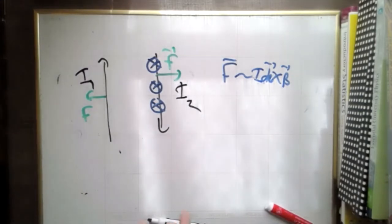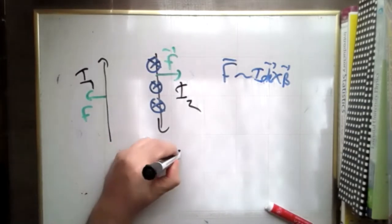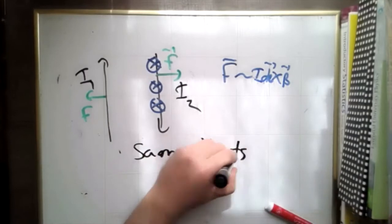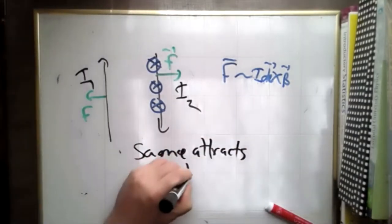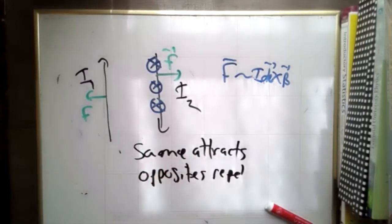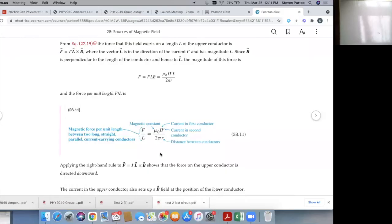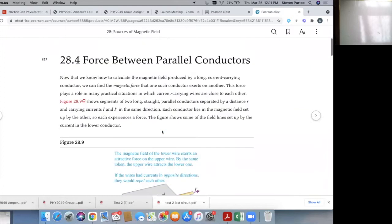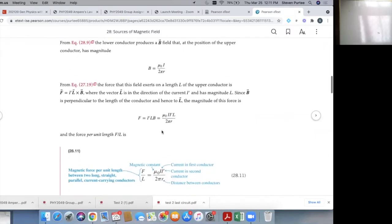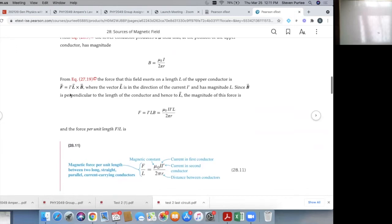It's counterintuitive — it's the opposite of what you might expect. Same attracts, opposites repel. Your intuition would tell you it'd probably be the other way, but it's not. So memorize that: same attract, opposites repel. And if you have a homework question asking for the magnitude of that force, use the formula. Also, there is a mu naught — the force is I times the vector that points in the direction of I cross B, so there is a mu naught in the formula.